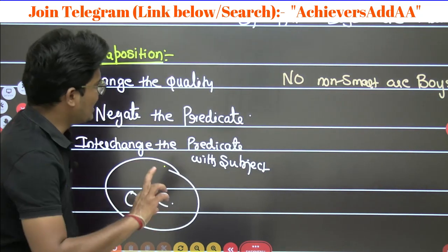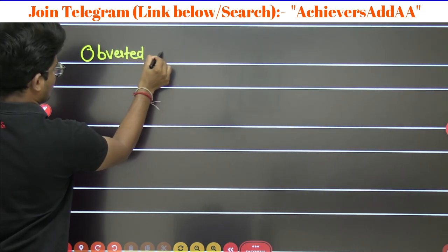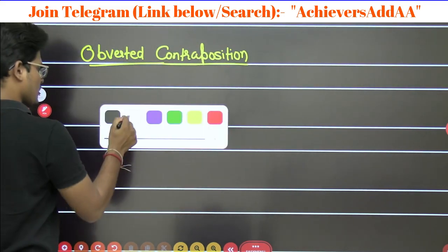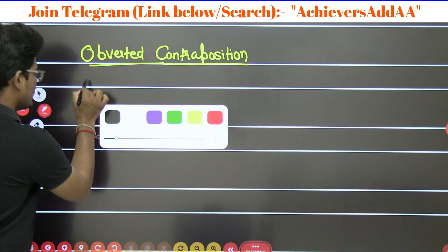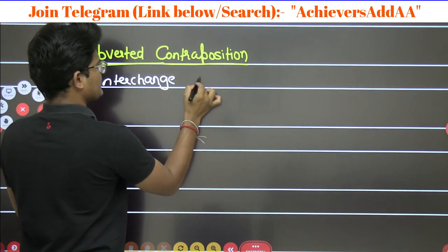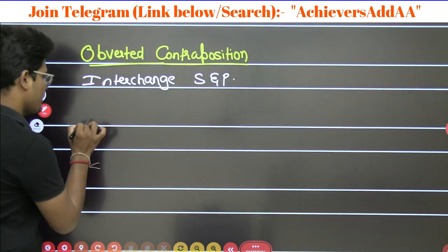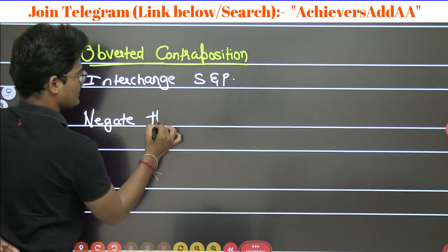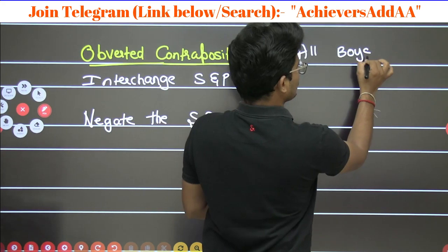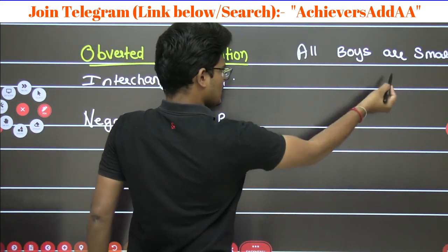Now the last one is averted contraposition. The rule for averted contraposition: first, interchange the subject with the predicate and the predicate with the subject. Then negate both the subject and the predicate. So: All boys are smart — interchange S and P. 'All' remains 'all', and the predicate 'smart' becomes the subject.